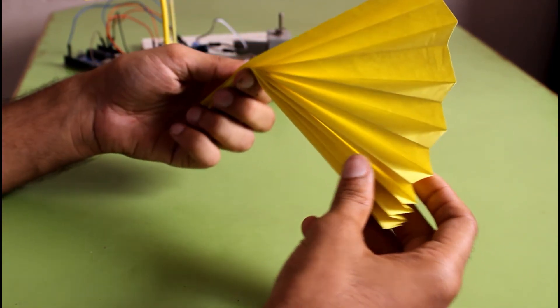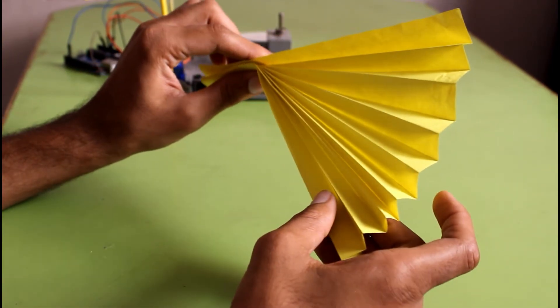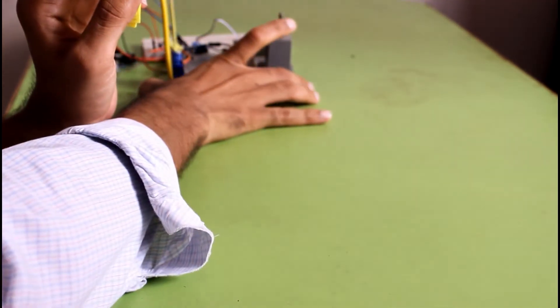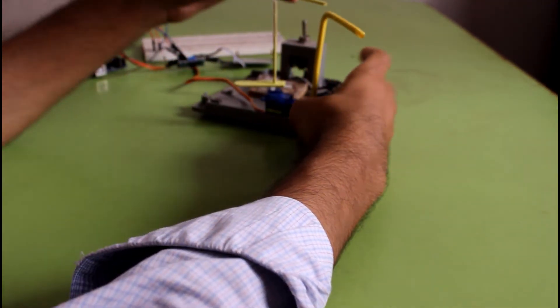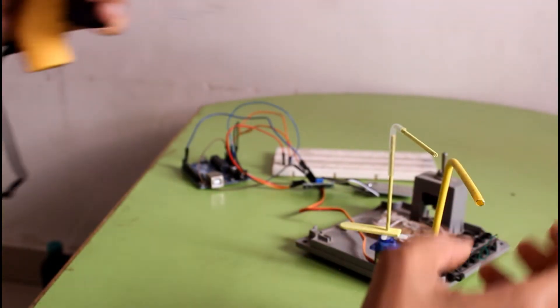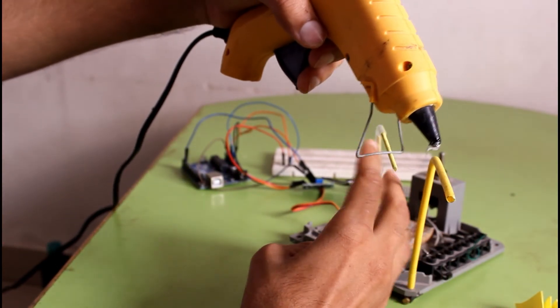This something looks like Japanese paint. And now we are going to glue this umbrella on the stage.